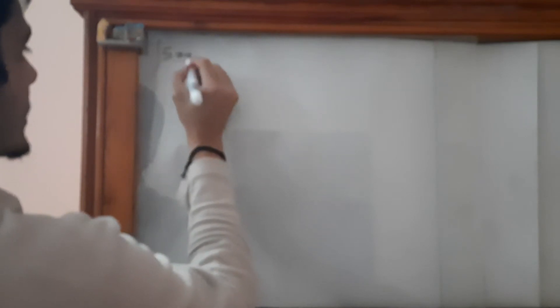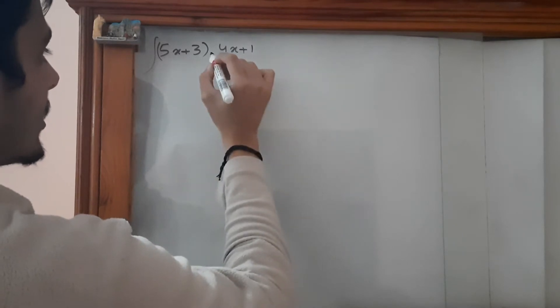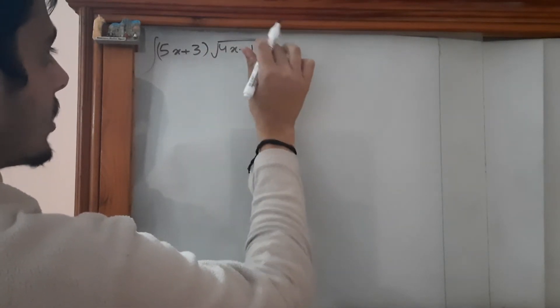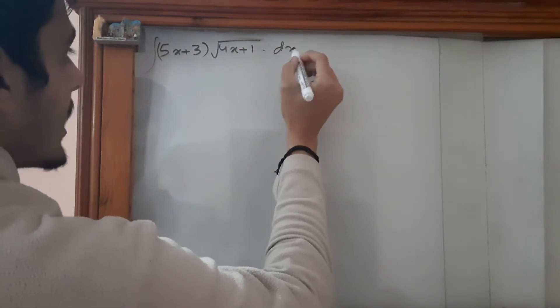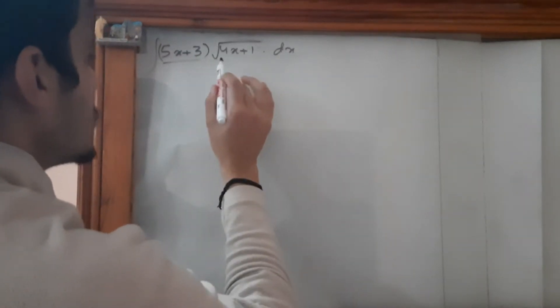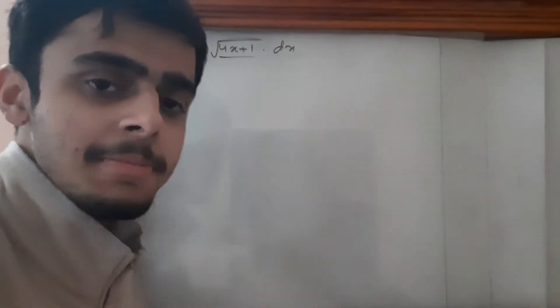To start, let's write it over here: the integral of (5x + 3) times the square root of (4x + 1) dx. What we are going to do is try to make this equal to what's inside the root. How can we make this 5x + 3 into 4x + 1?